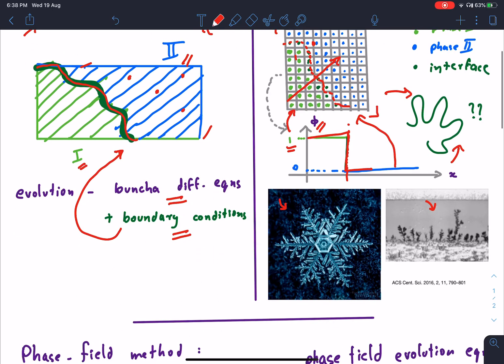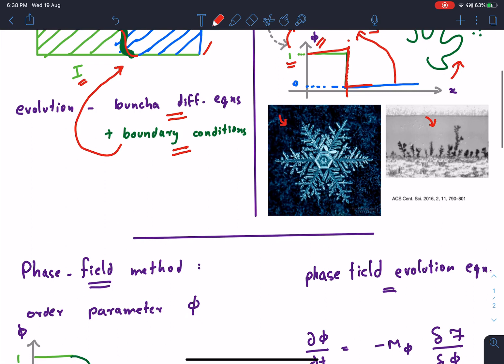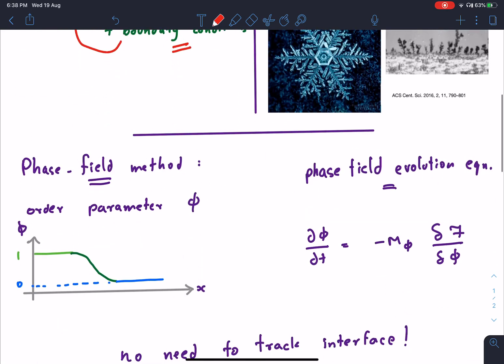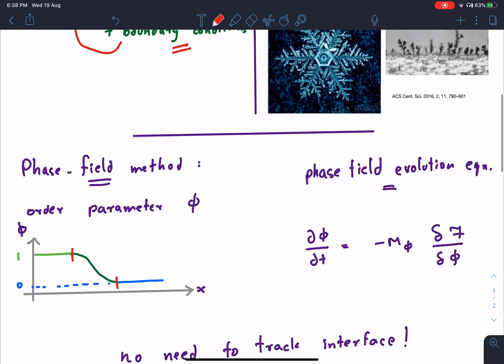The interface is spread across a certain length and multiple grid points. This allows us, since the order parameter is now a continuous variable, to write another differential equation for the evolution of the order parameter itself without having to track the boundaries explicitly, because the boundary conditions are now encapsulated in these differential equations.